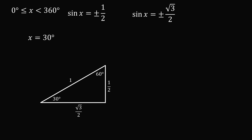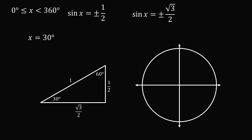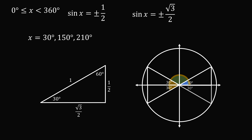But we want to solve for x in the range of 0 to 360 degrees, so let's draw a unit circle. Here we have a triangle of 30 degrees — this is one value, x is equal to 30 degrees. But we could also have this triangle with 30 degrees on the other side, giving the angle of 180 minus 30 degrees, which is 150 degrees. Here we have another triangle with 30 degrees, so the angle will be 180 plus 30 degrees, which is 210 degrees. Finally, this angle will be equal to 360 minus 30 degrees, which is 330 degrees. So those are all the solutions to sine x is equal to plus or minus 1 half. We can do the same thing for sine x is equal to plus or minus root 3 over 2.